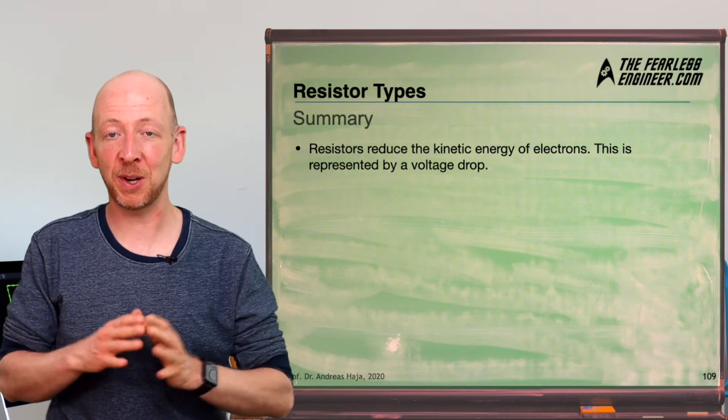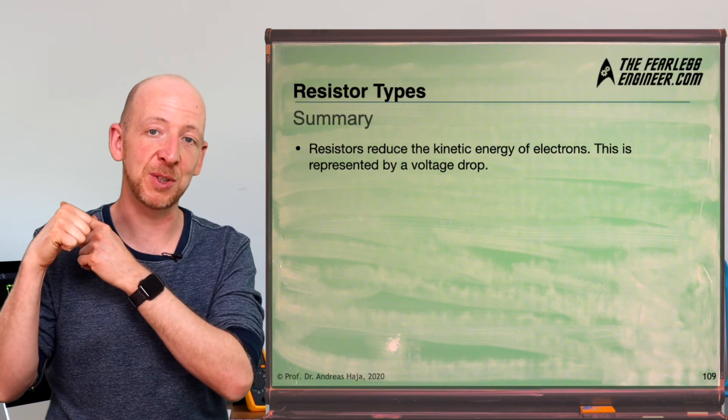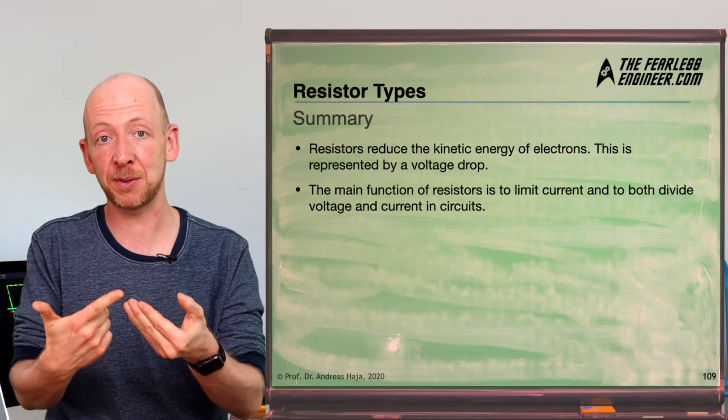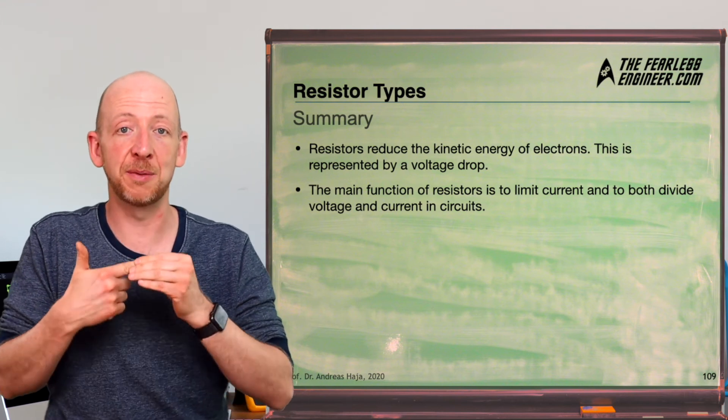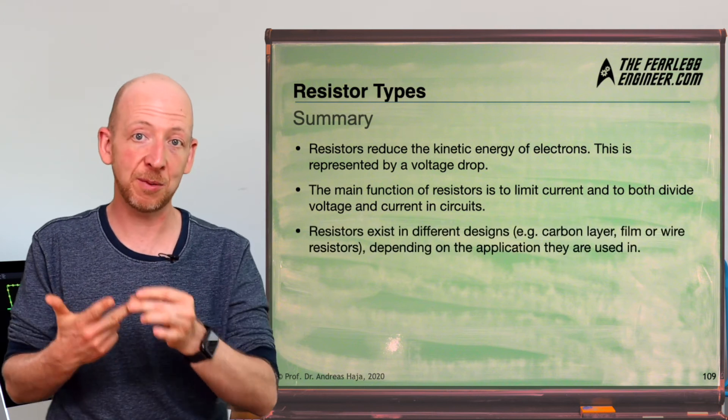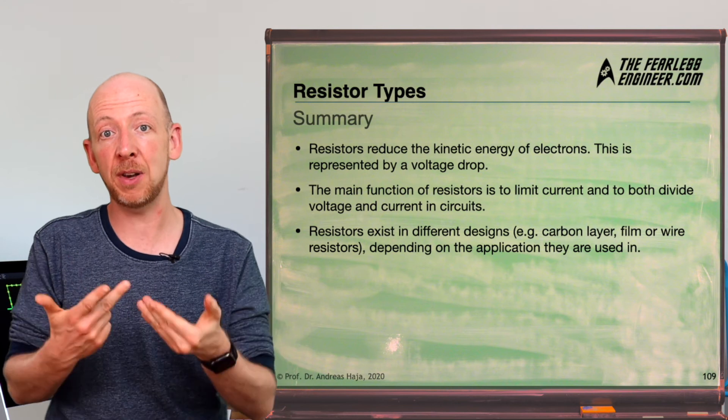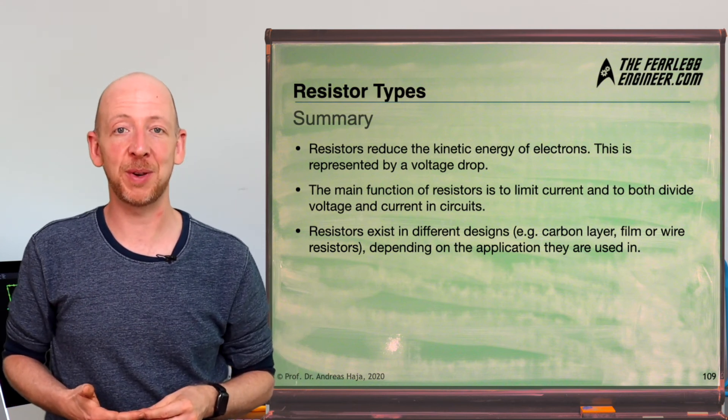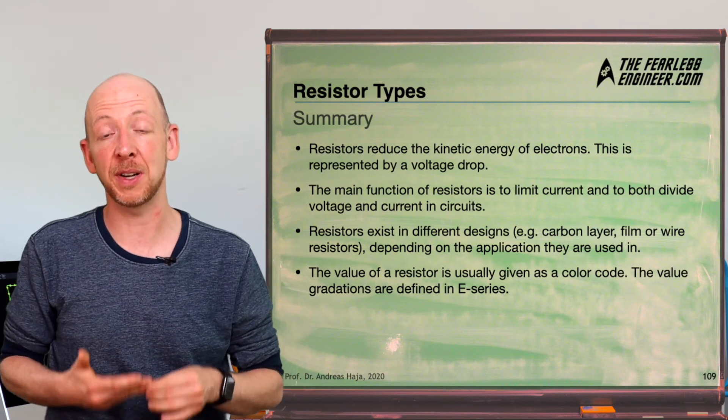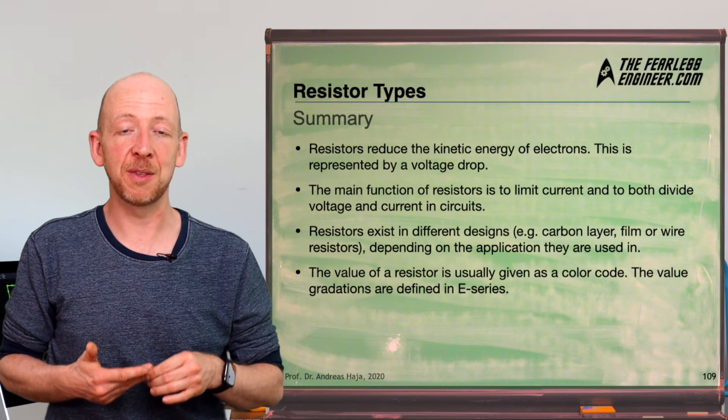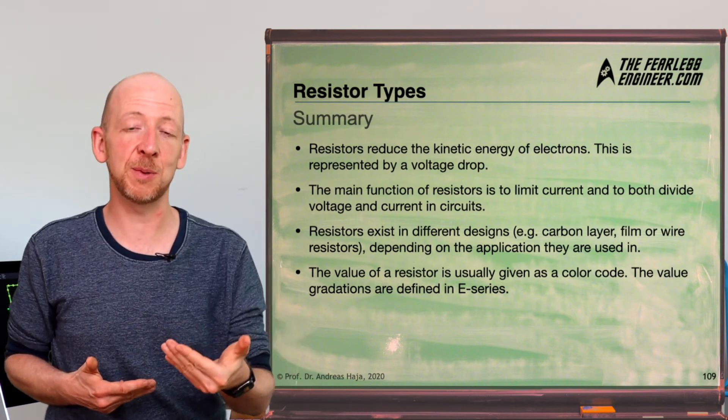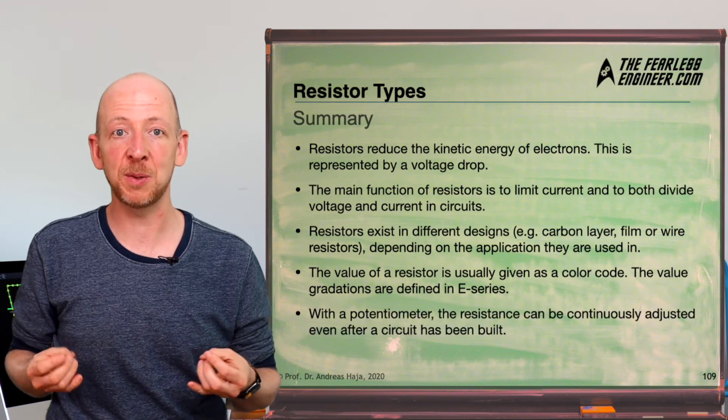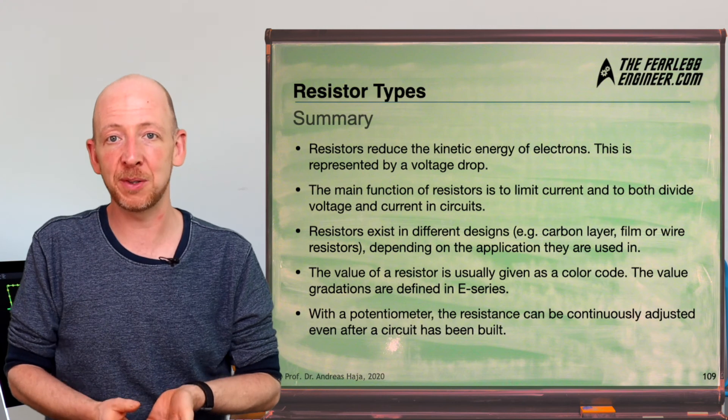Now, that was quite a lot of information about resistors. Let's quickly summarize the most important takeaways for you. Firstly, resistors reduce the potential energy of electrons, which is expressed in a drop in voltage across the resistor. And secondly, there are many applications and tasks for resistors, but the main function is to limit the current and to divide the voltage and also the current between certain areas of a circuit. And thirdly, resistors exist in many different designs, the most common being carbon layer resistors and also film resistors. And next, we have seen that the value of a resistor is often indicated by a color code to save space on the package and also the range of available resistance values is defined in a so-called E-series. And lastly, we can use a potentiometer to flexibly adjust current flow and voltage by simply turning a knob.